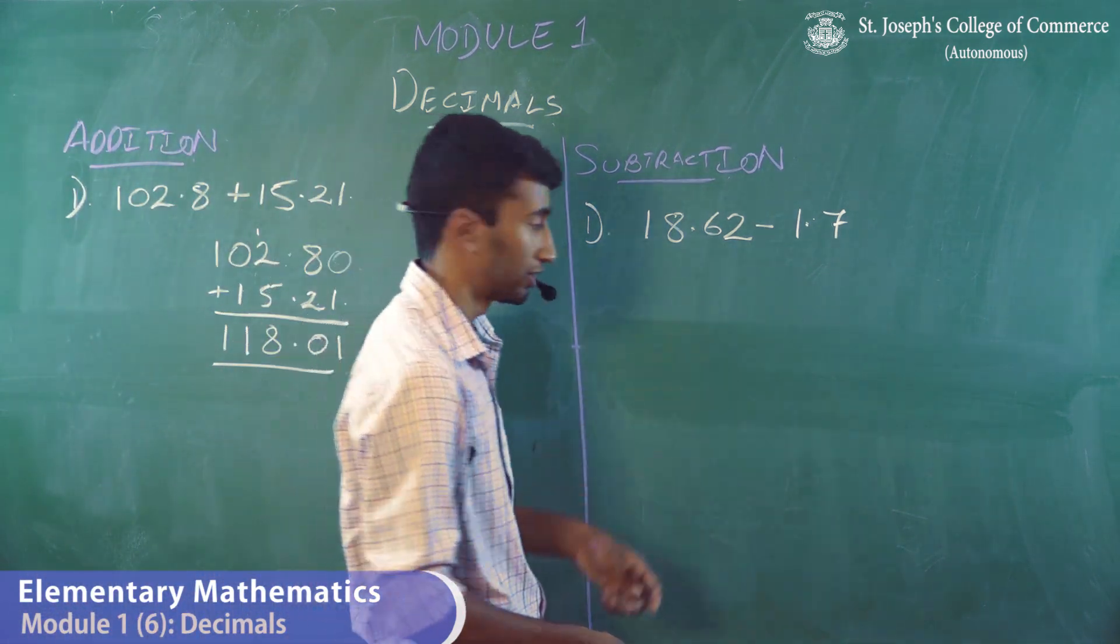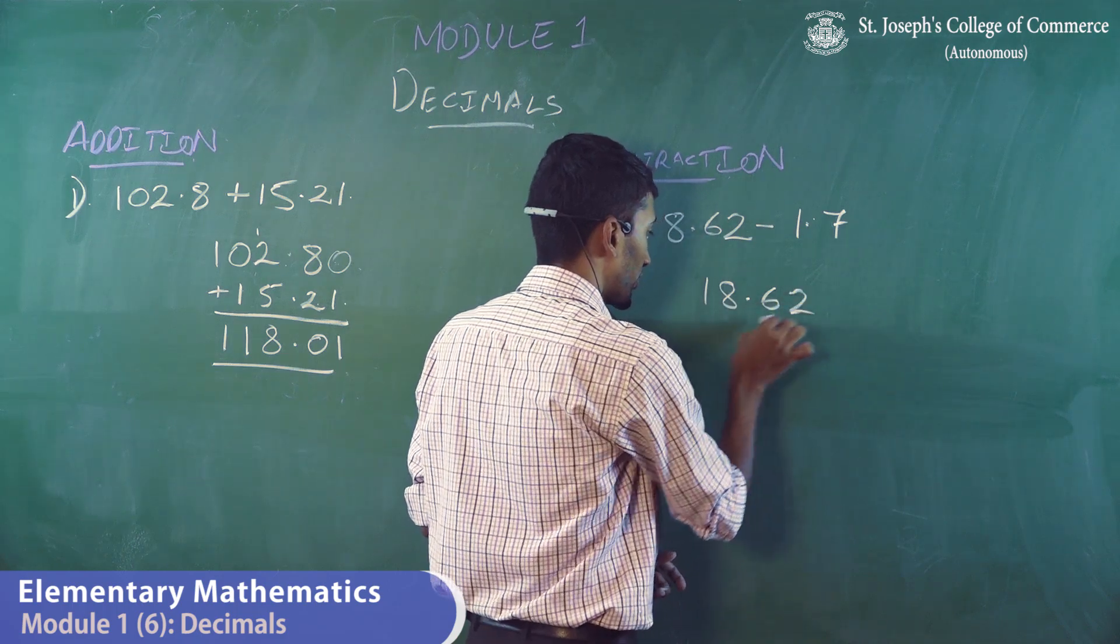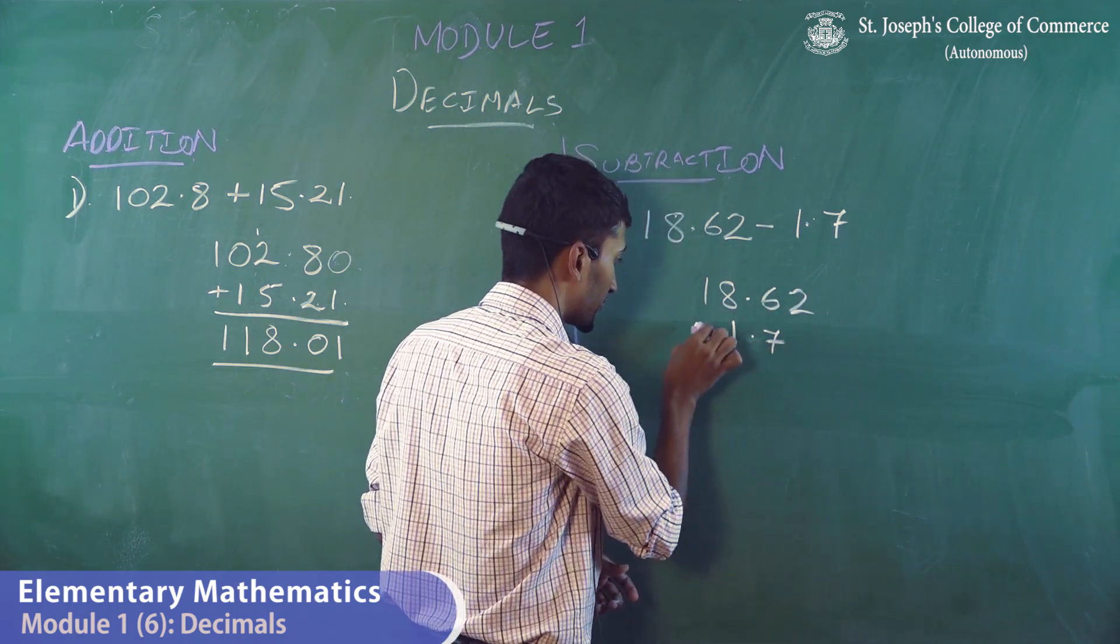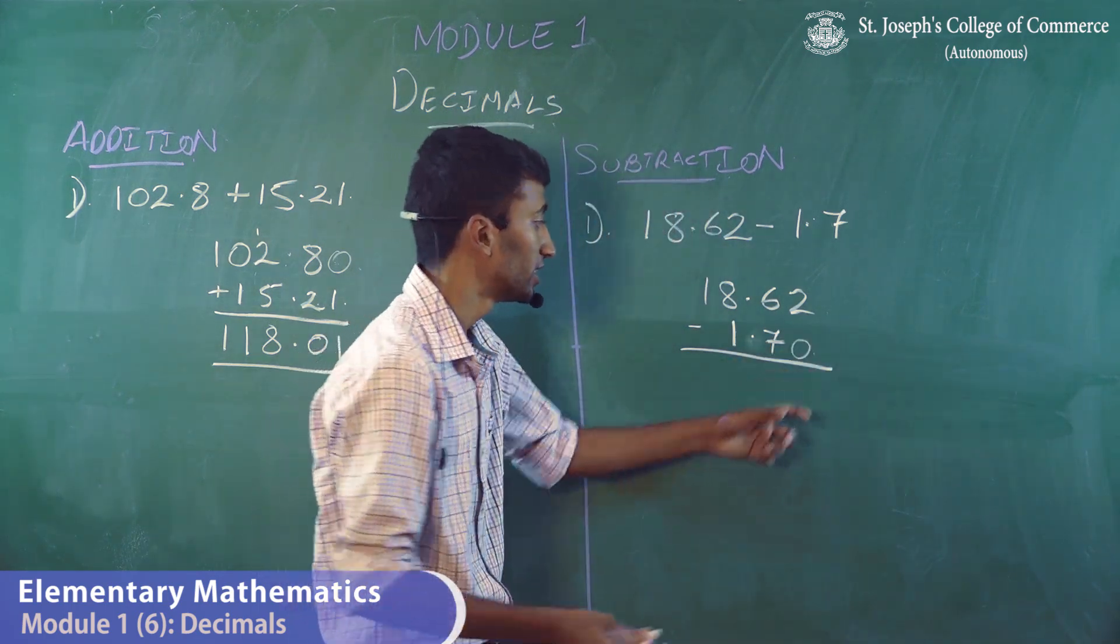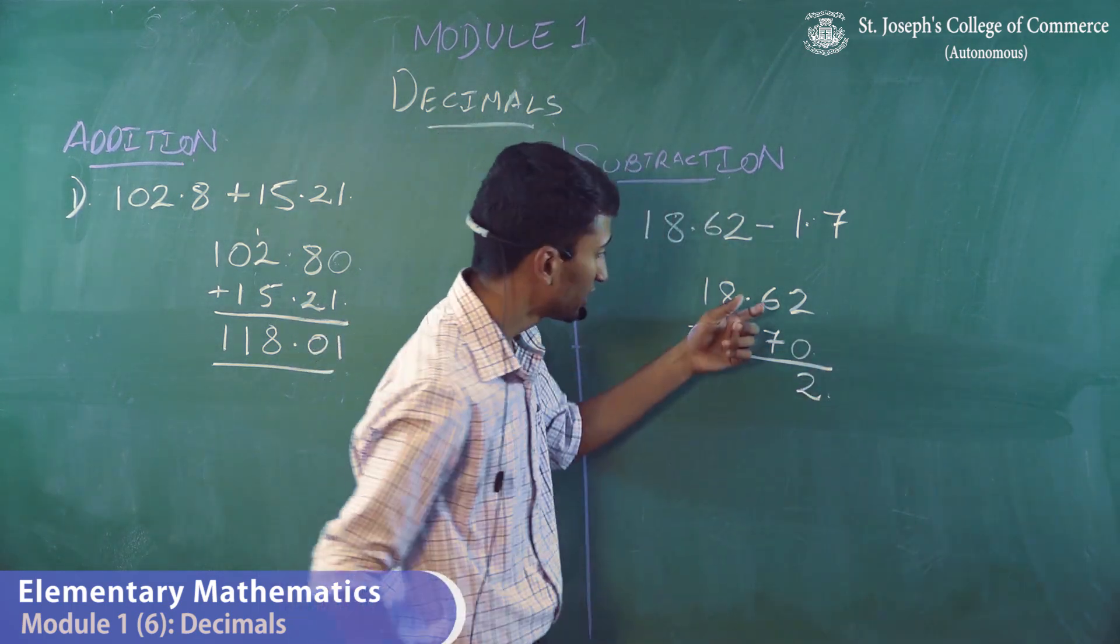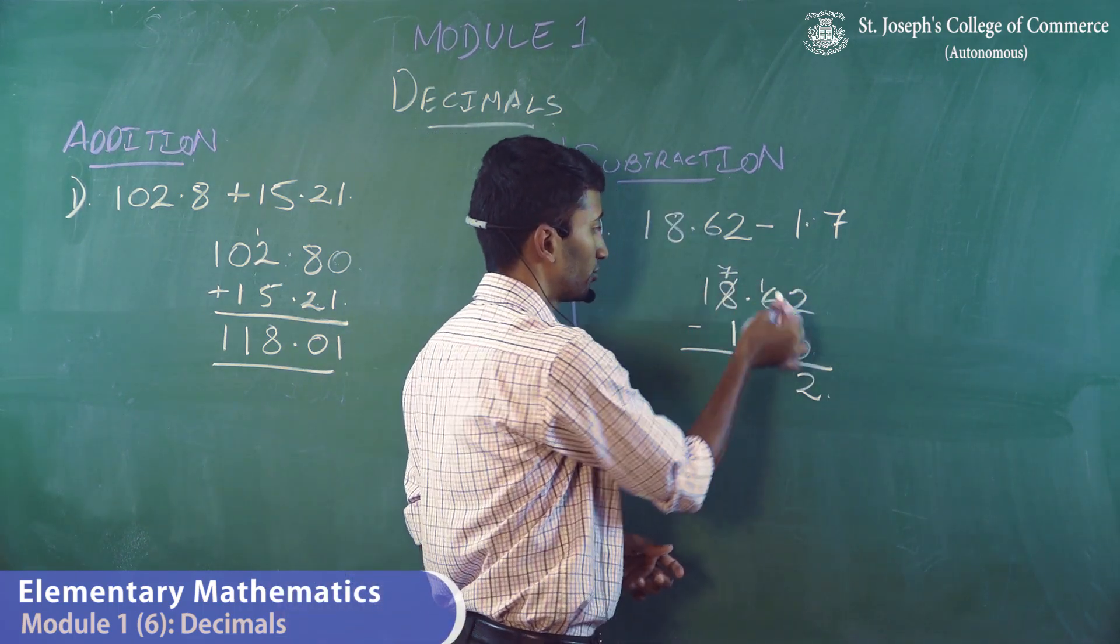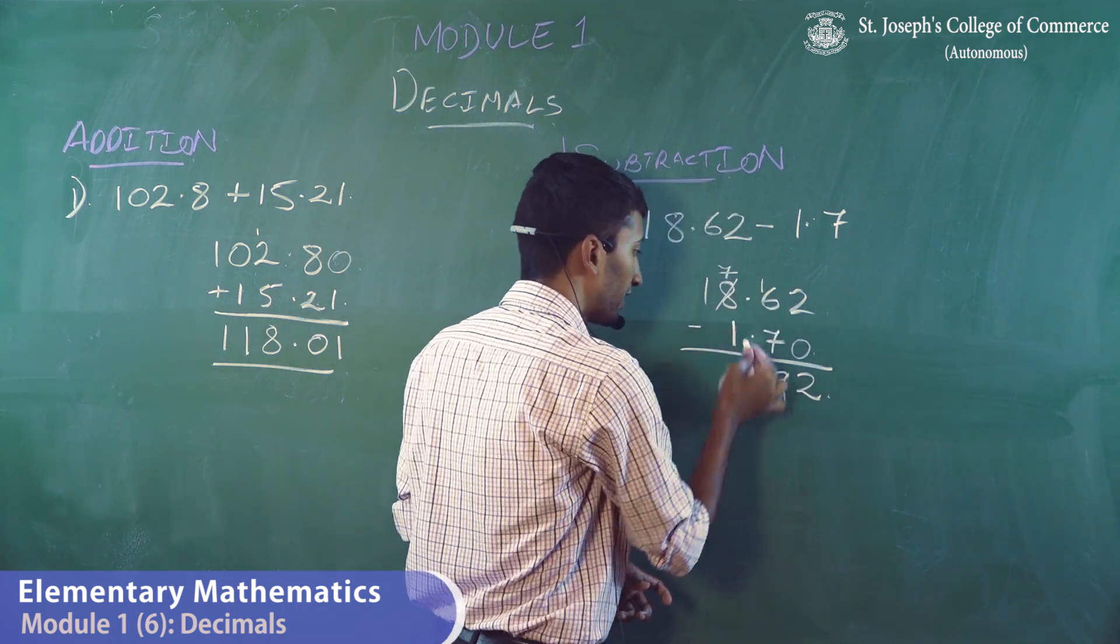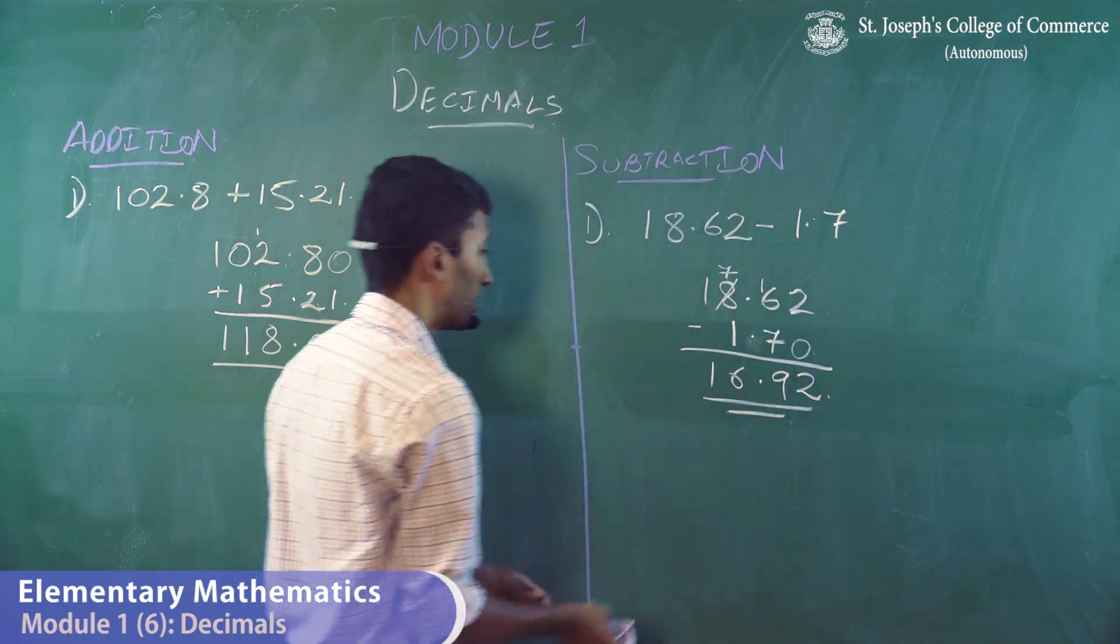Similarly, in subtraction, 18.62 minus 1.7. I can put a 0 here. 2 minus 0 will give you 2. 6 minus 7 is not possible, so you cancel out 7 and bring 1 here. That would be 9. 7 minus 1 will give you 6 and 1. This is your answer.